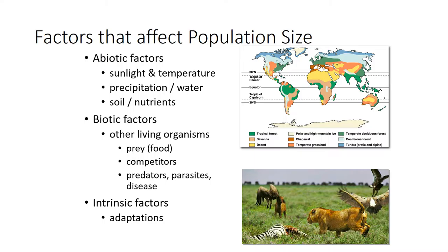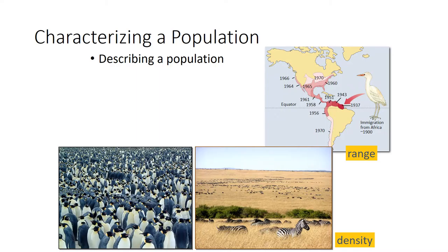There are also intrinsic factors — things that are part of the organism's genetics, such as the age at which it first breeds. Those intrinsic factors in your genes might affect where or how far you can live in terms of different types of habitats. When we characterize a population — that is, describe it — we look at a couple of different things. We'll look at its range: where do we see it?